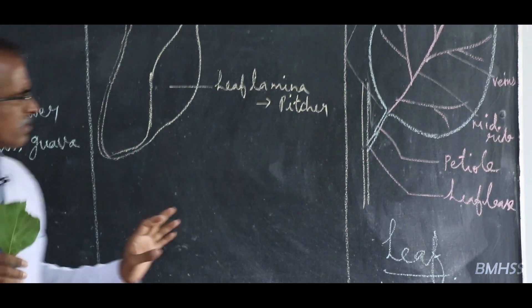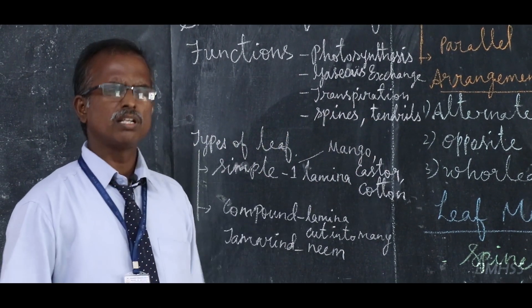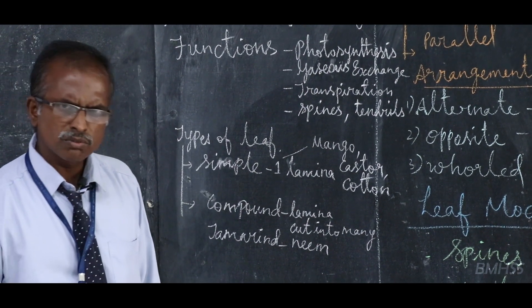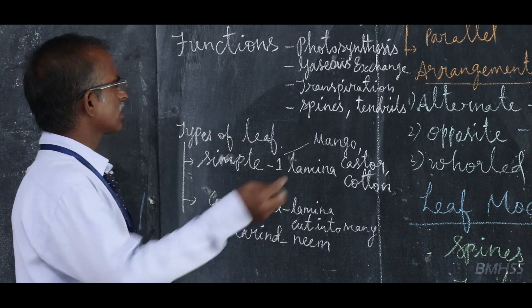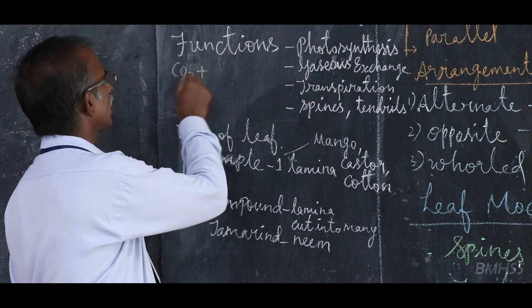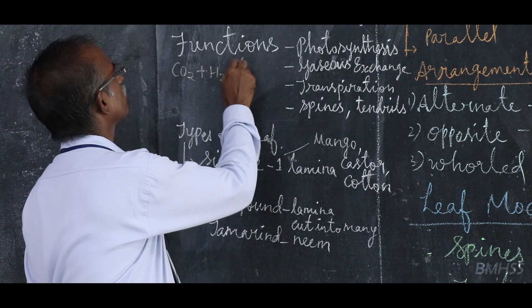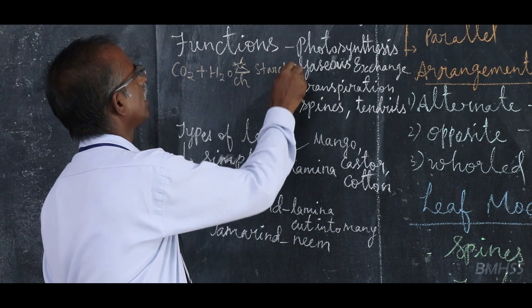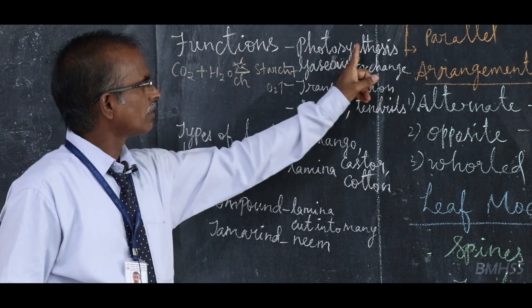Leaves are very, very important. What are the functions of the leaf? The main thing basically all students know — that is photosynthesis. Plants manufacture food material by the process of photosynthesis. We learnt in lower classes: the raw materials are carbon dioxide obtained from the air and water obtained from the soil. In the presence of sunlight and chlorophyll pigment, they prepare starch material. During photosynthesis, oxygen gas is released.